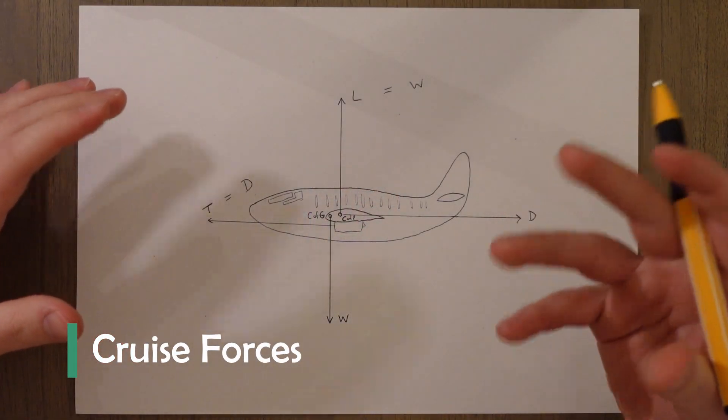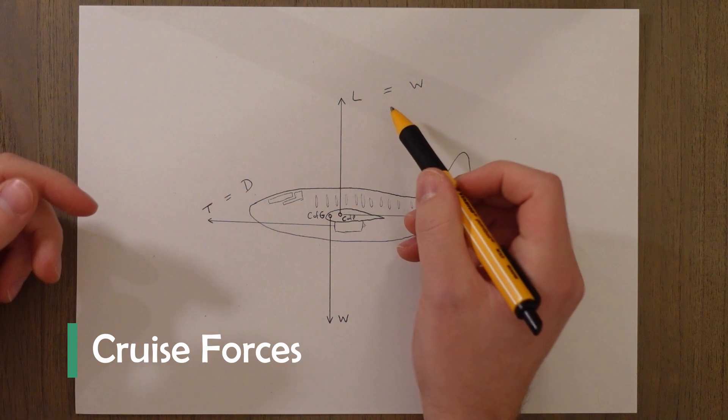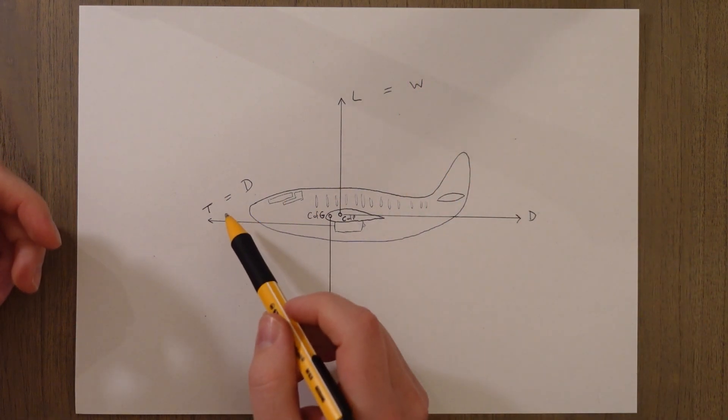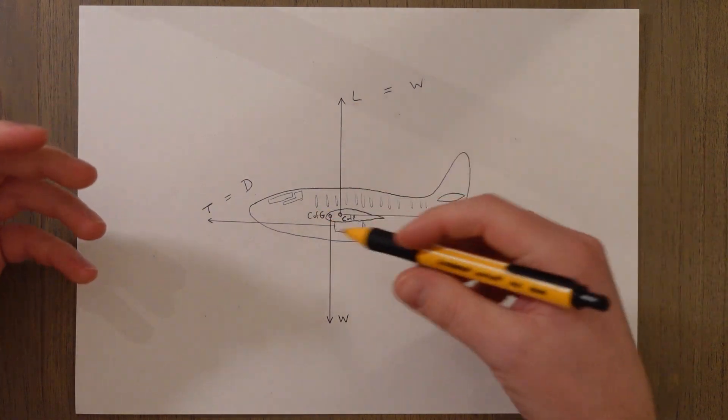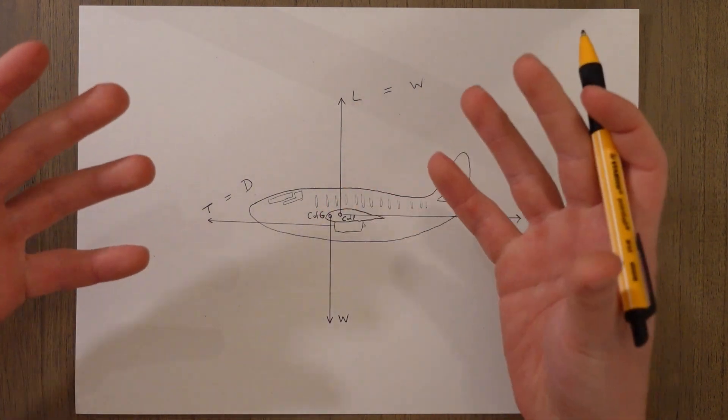In steady level flight the forces are balanced. Lift equals weight and thrust equals drag. In a simple drawing of the four forces they all act through the center of the aircraft which is fine for rough calculations.